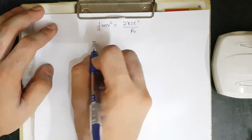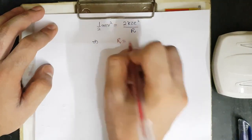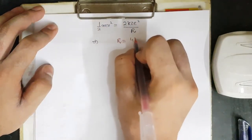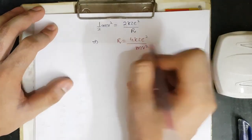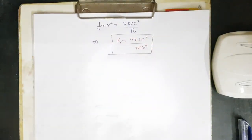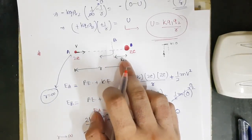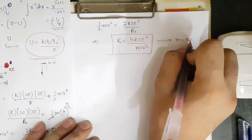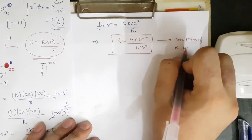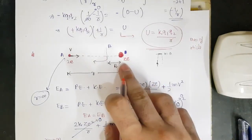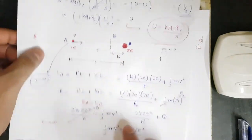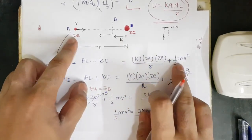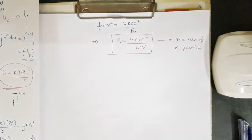Rearranging to solve for R, we get: R = 4kZe² over mv². This is the distance of closest approach. An important note: m here is the mass of the alpha particle, not the mass of the target nucleus — as is clear from the kinetic energy term we wrote for the alpha particle initially.